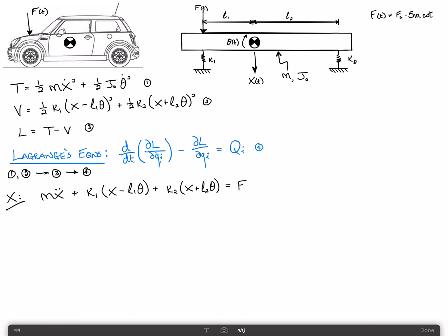I'm just going to call it F. If I've dropped the T dependency, it should be implied that X and theta and F are all functions of time. Just for shorthand, I'm going to leave that. I'm going to write it in a slightly different form. M X double dot plus K1 plus K2 times X plus K2 L2 minus K1 L1 theta equals F. That's our first equation of motion. We'll call that equation number five.